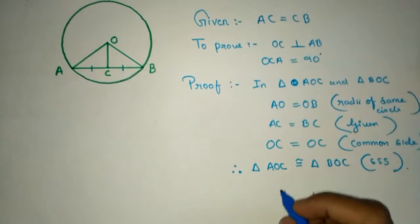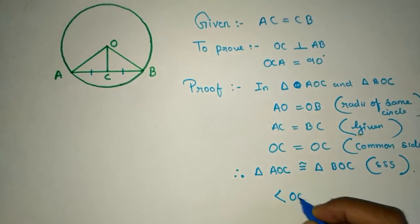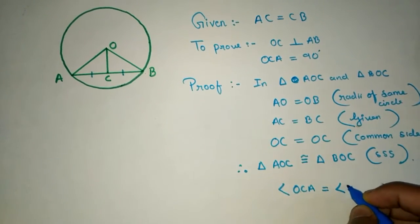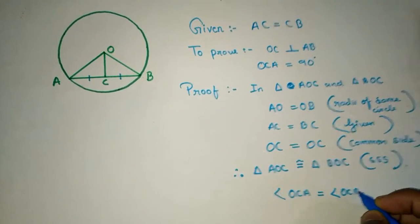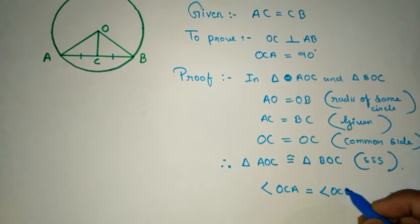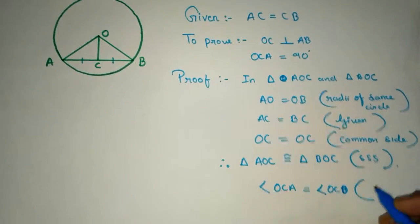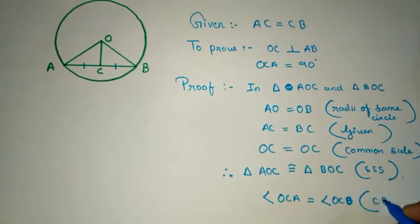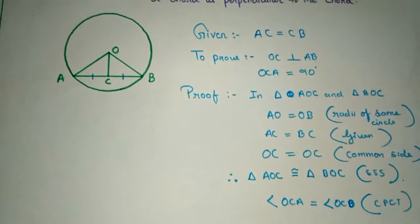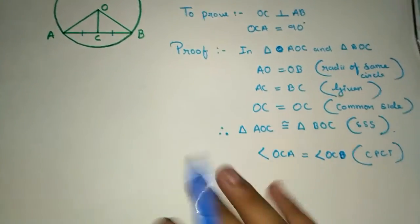Angle OCA is equal to angle OCB, because these two triangles are congruent. By CPCT — corresponding parts of congruent triangles — these two angles are equal.